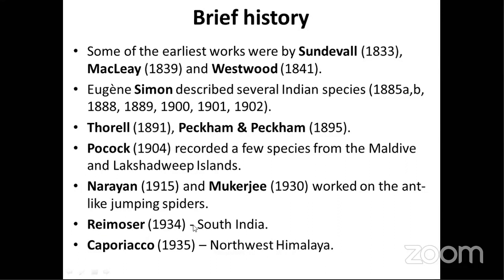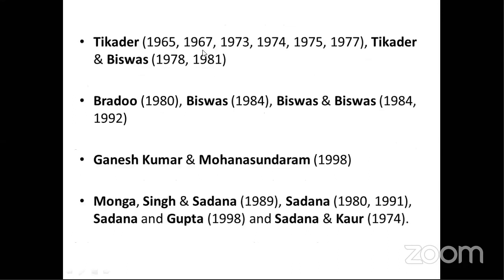Ray Moser, a German worker in 1934, worked mostly on spiders from South India and the Nicobar Islands. He described a few species, including Stenaryllis leiceti, the colorful spider we saw in the first slide. Kaporiyaku in 1935 worked on the Karakoram range in the northwestern Himalayan region. Tikader described many species across India, mostly from Maharashtra and West Bengal. Along with co-workers Tikader and Malhotra, they described a few species. Brady in 1980 described species from Punjab. Biswas, Sadhana and co-workers described a few species from North India.